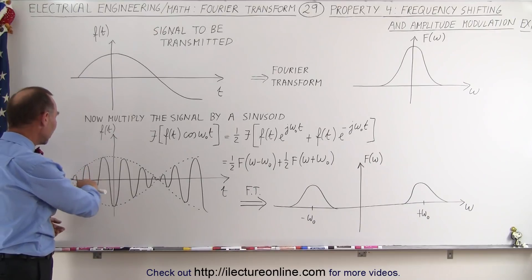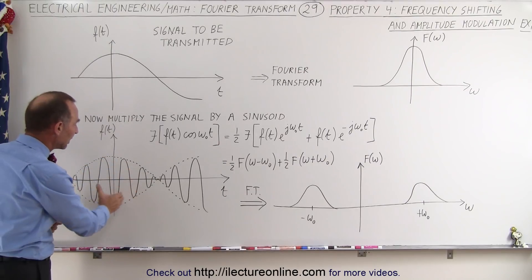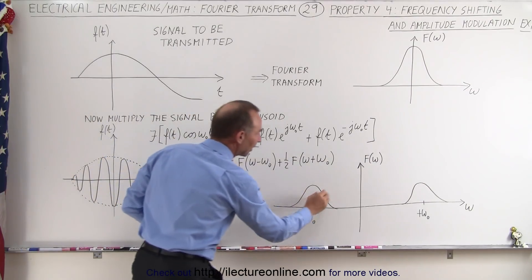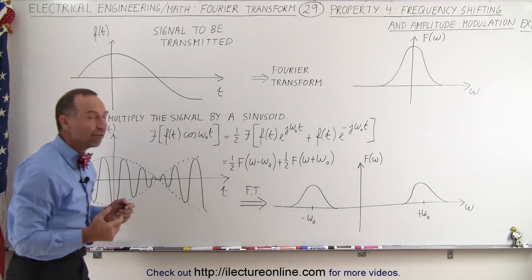Now notice you still have the general shape of the original signal that gives you the amplitude envelope of the cosine function. So when we take the Fourier transform, you still have the same signal in the frequency domain as before.